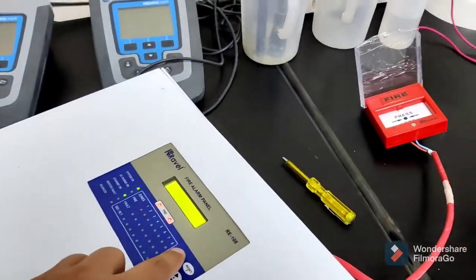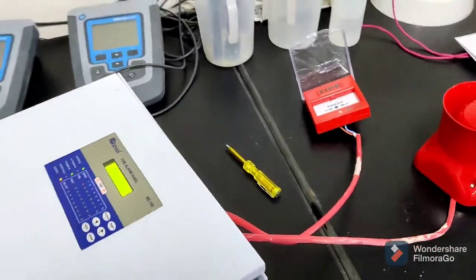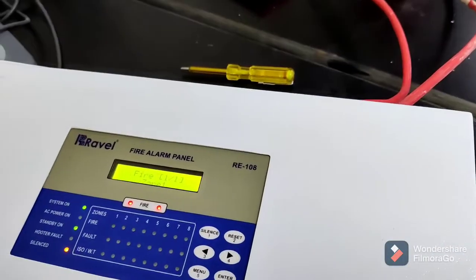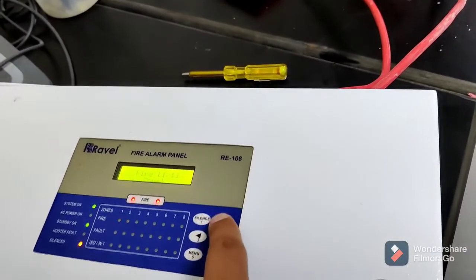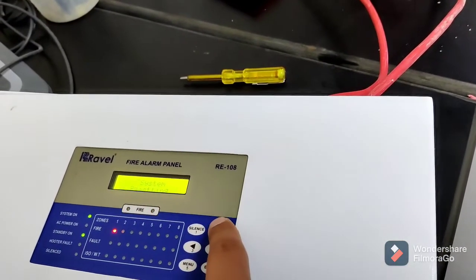Now you will push the call point. Look at the sound, the sound started. So just we need to make silence because in zone one there is a fire and also it needs a reset. You can reset even from here and also you can reset from outside from the call point.